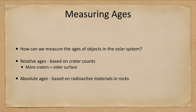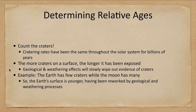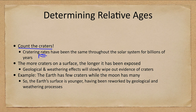Let's start off by looking at relative ages. Ideally, what you do is count the craters. What we find is that cratering rates have been essentially the same throughout the solar system for billions of years. That means it doesn't matter whether you're in the inner solar system or the outer solar system — everything has been hit just about as much.